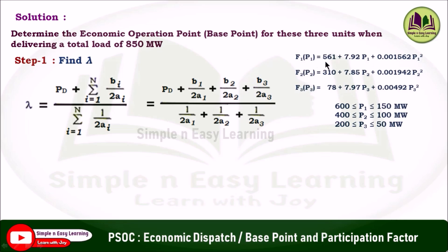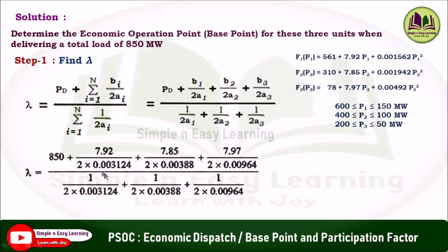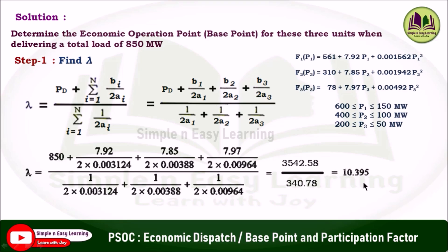The coefficients a1, a2, a3 and b1, b2, b3 are from the cost functions. For unit 1: a1 = 0.001562 and b1 = 7.92. Substituting all values with demand Pd = 850 MW, the numerator gives 3542.58 and denominator gives 340.78, resulting in lambda equal to 10.395.